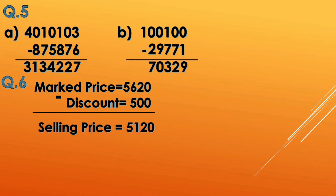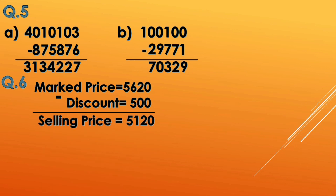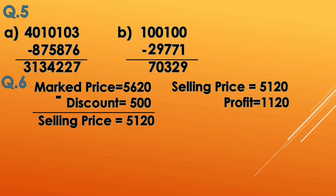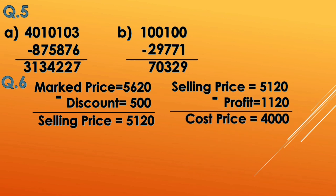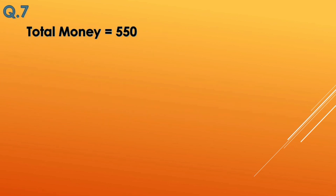In question 6, the market price is 5620 and the discount is 500. Subtracting gives the selling price of 5120. The profit is 1120, and subtracting that from the selling price gives the cost price of 4000.